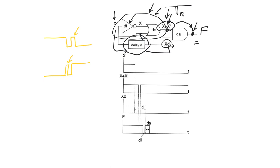Let's write F in terms of X as a logic function. This node is X + X̄, and the lower node is X. Writing a logic expression, delay has no role to play here. Following Boolean simplification, X + X̄ equals 1, and so F is supposed to be equal to X. So F is supposed to follow the transitions in X: if X makes a transition from 1 to 0, F is supposed to make the same transition from 1 to 0, which it will — except there will be a glitch in the middle.